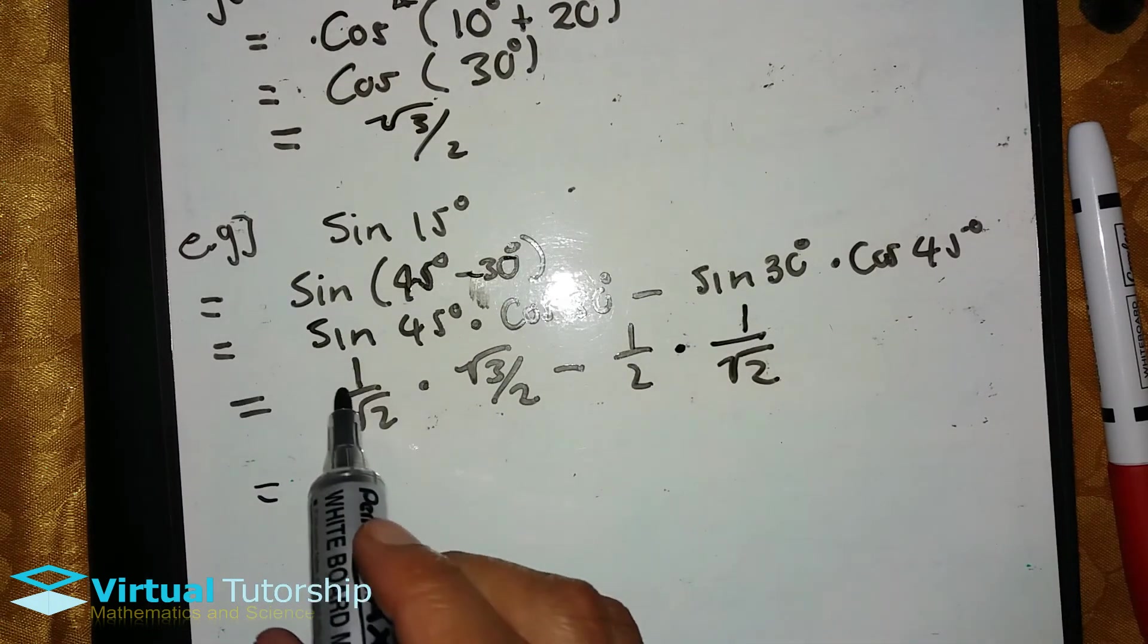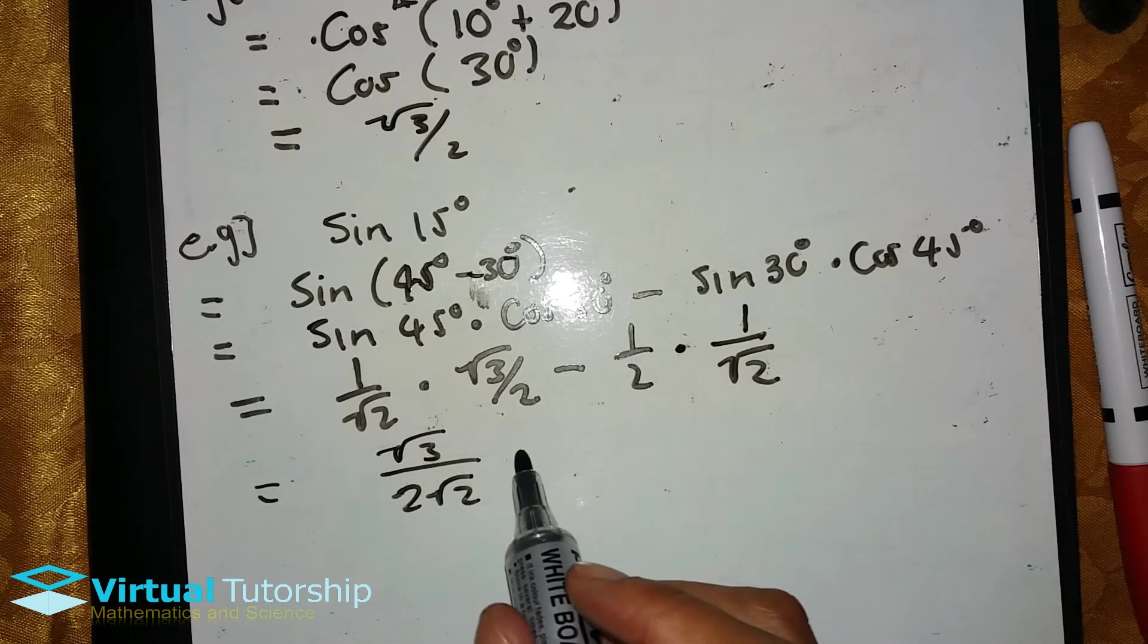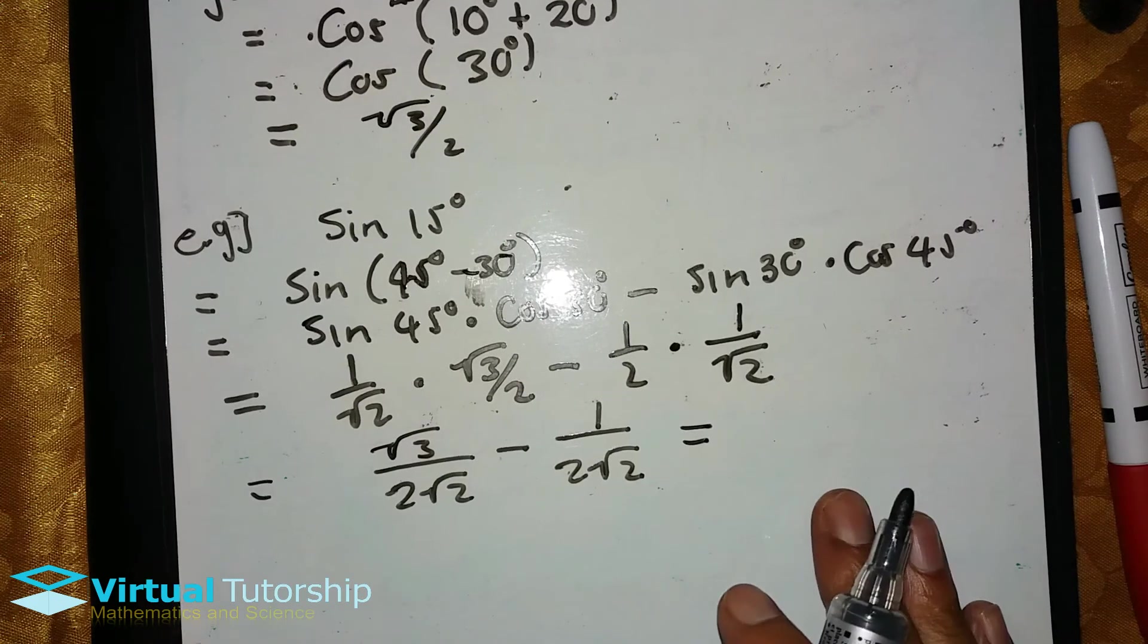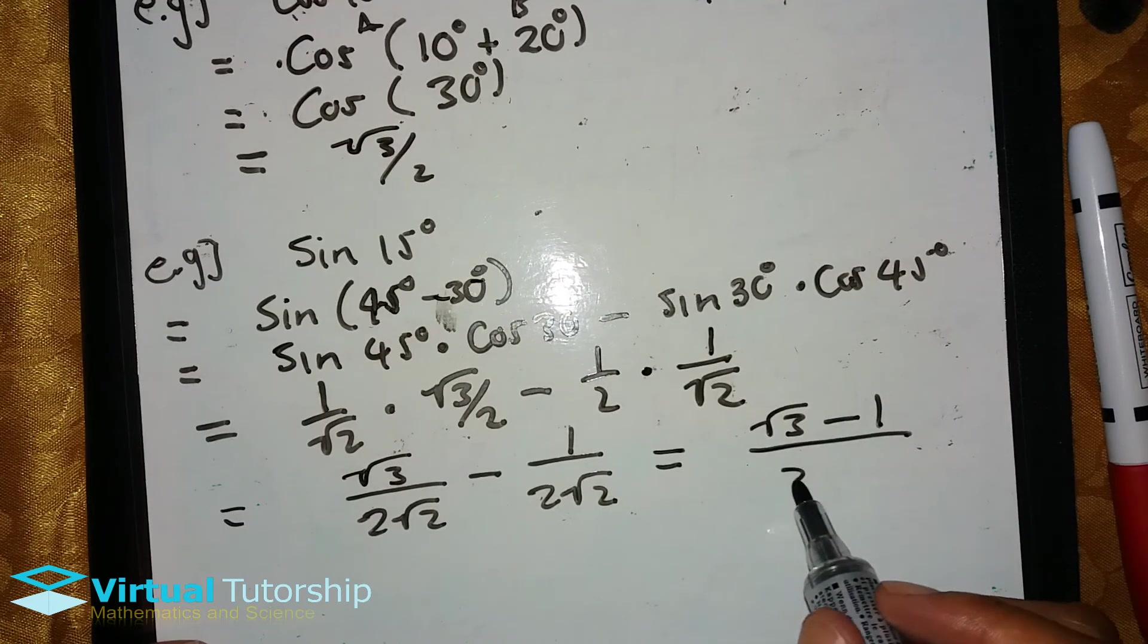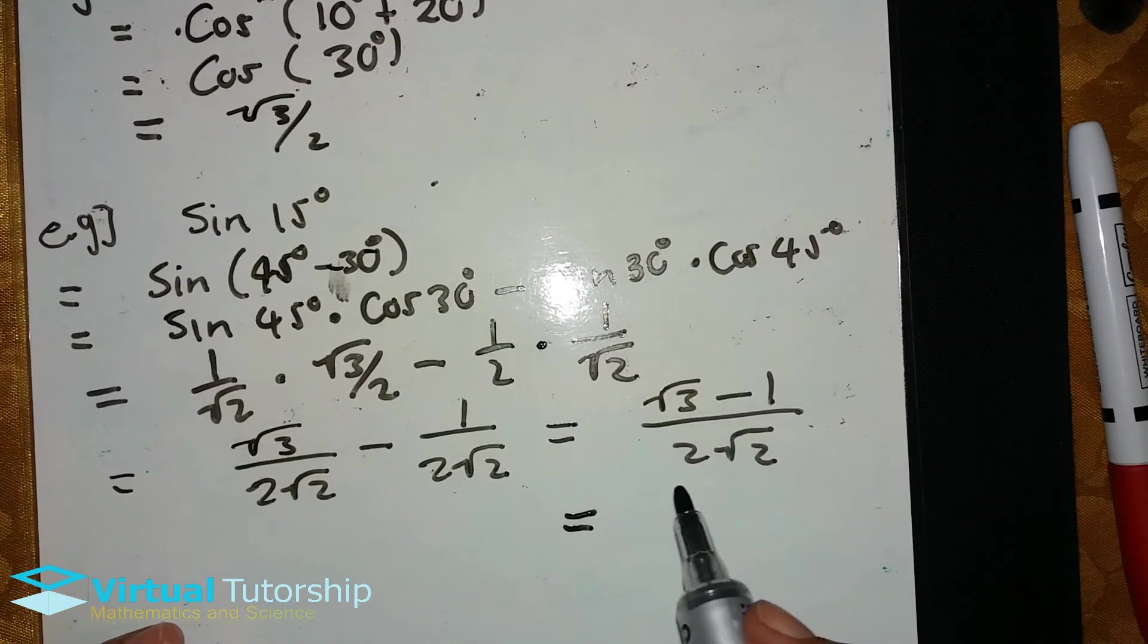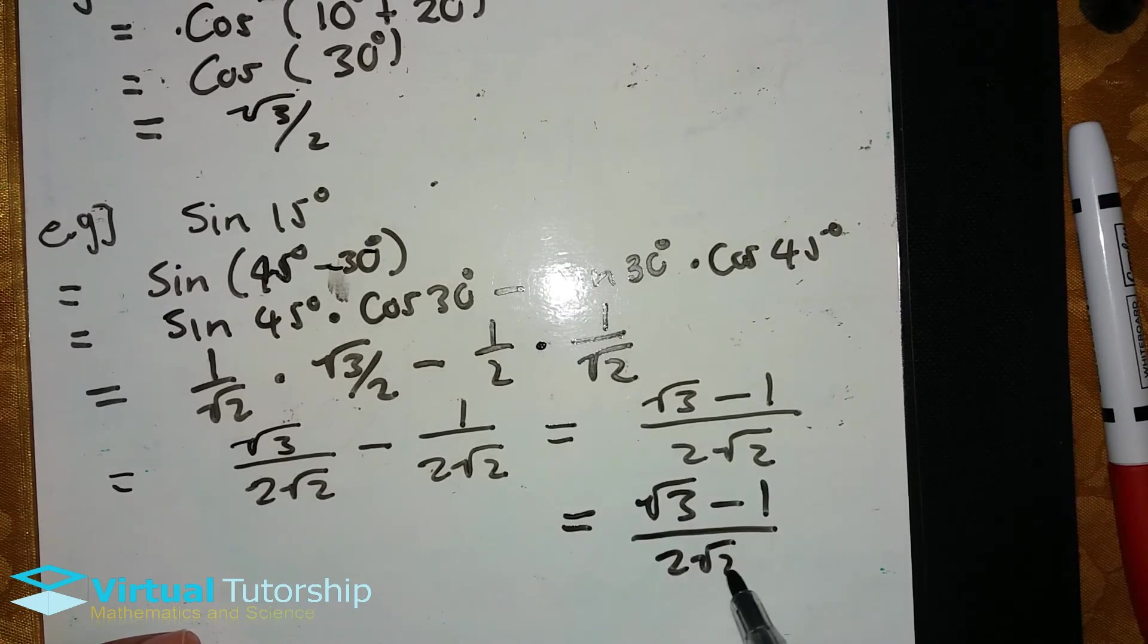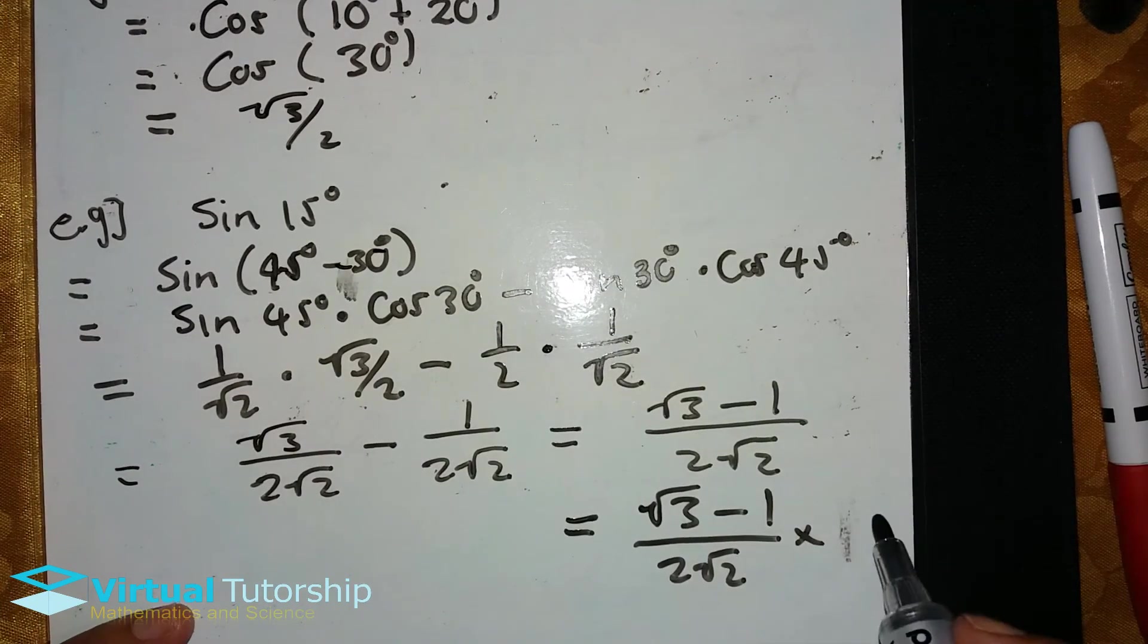Equal to multiplying the fractions: square root of 3 over 2 square root 2 minus 1 over 2 square root 2. Subtracting these fractions with a common denominator, we get square root 3 minus 1 over 2 square root 2. Like in the first example, we need to rationalize this lesson.